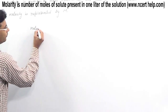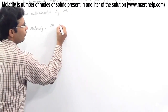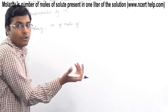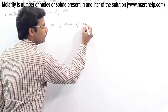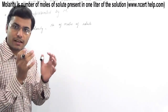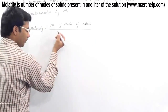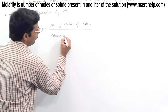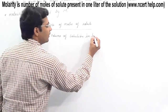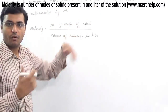The formula of molarity is: number of moles of solute — the substance which is present in lesser quantity in a solution — divided by the volume of the solution in liters. The volume must be in liters.